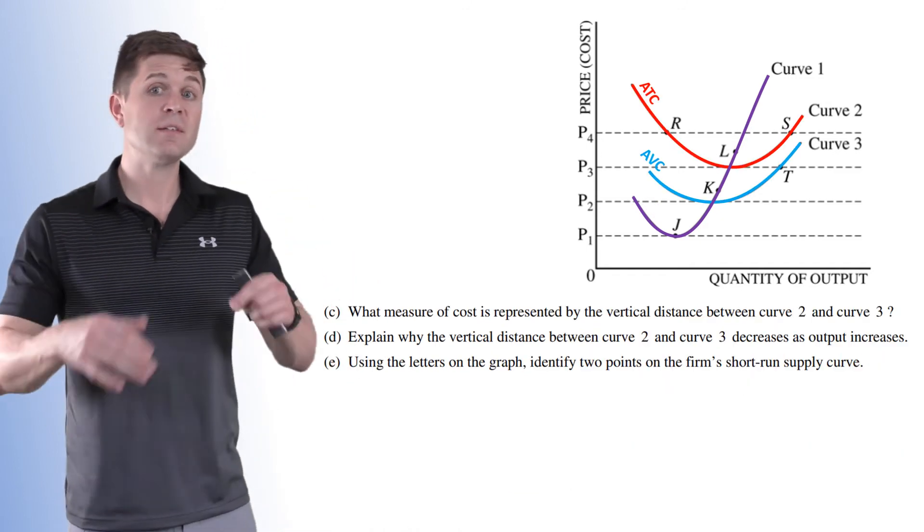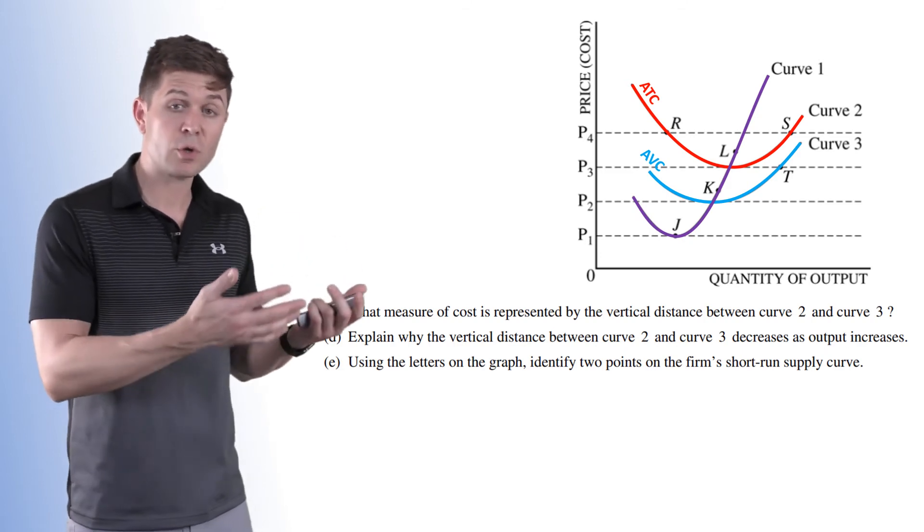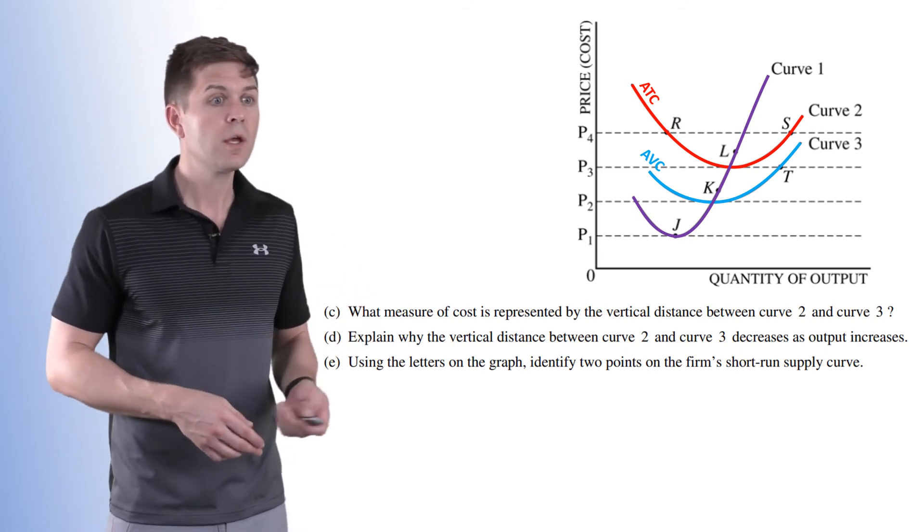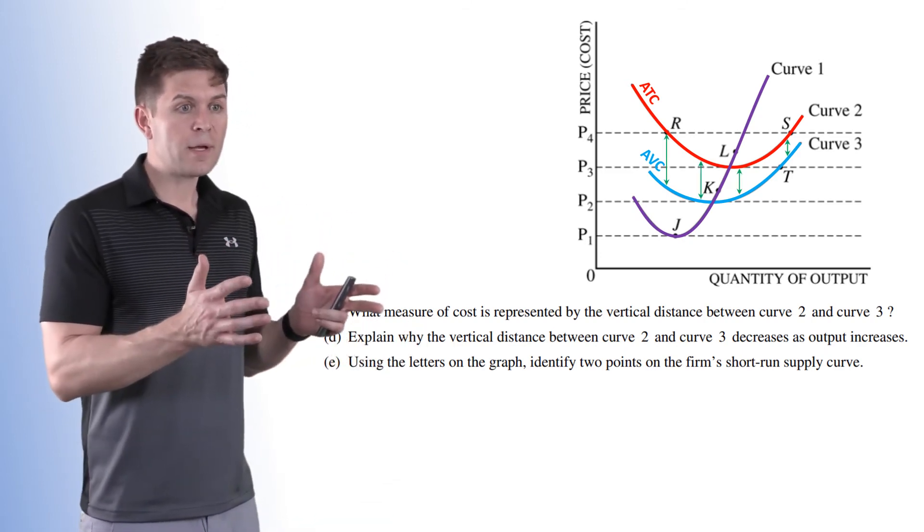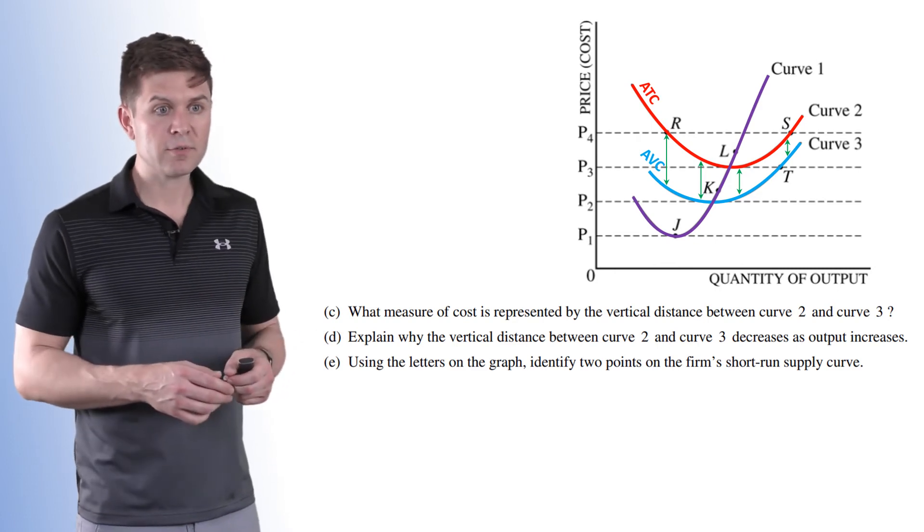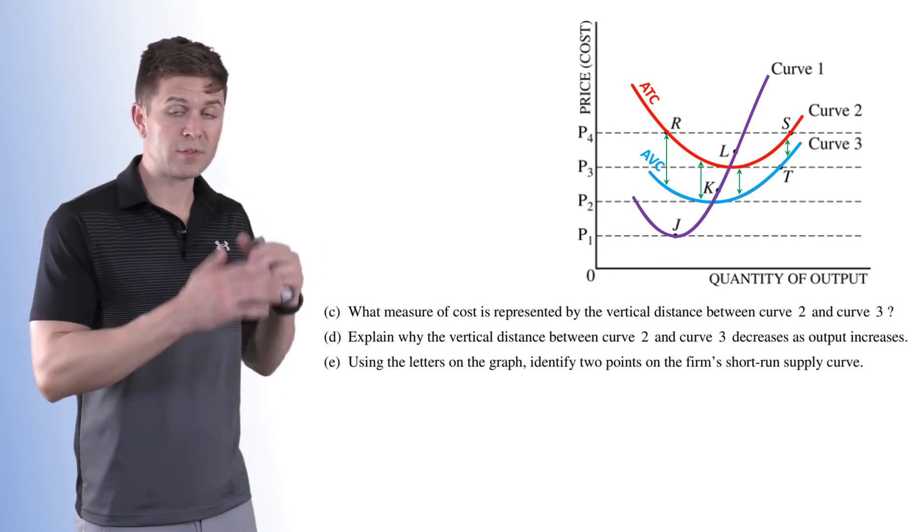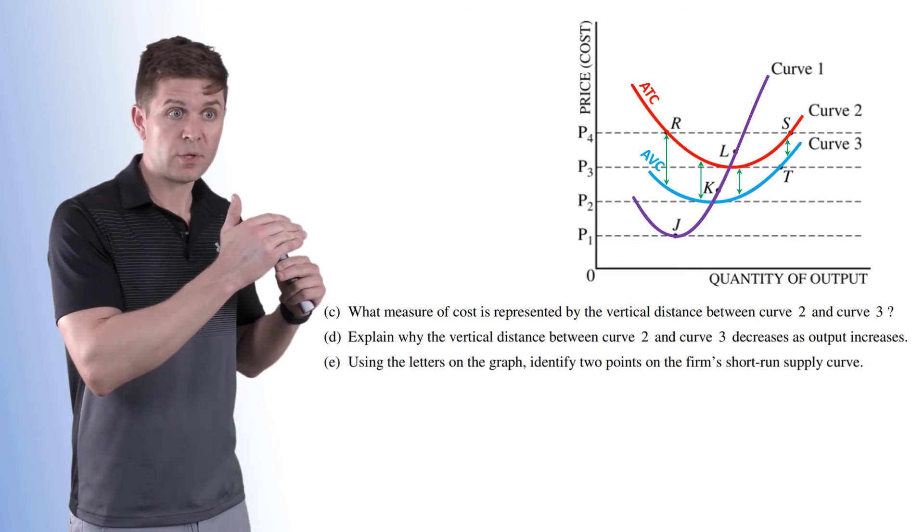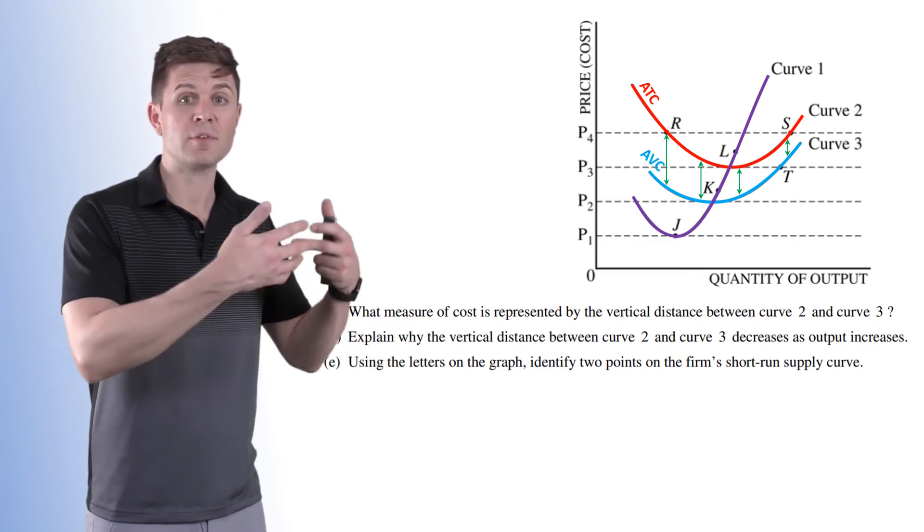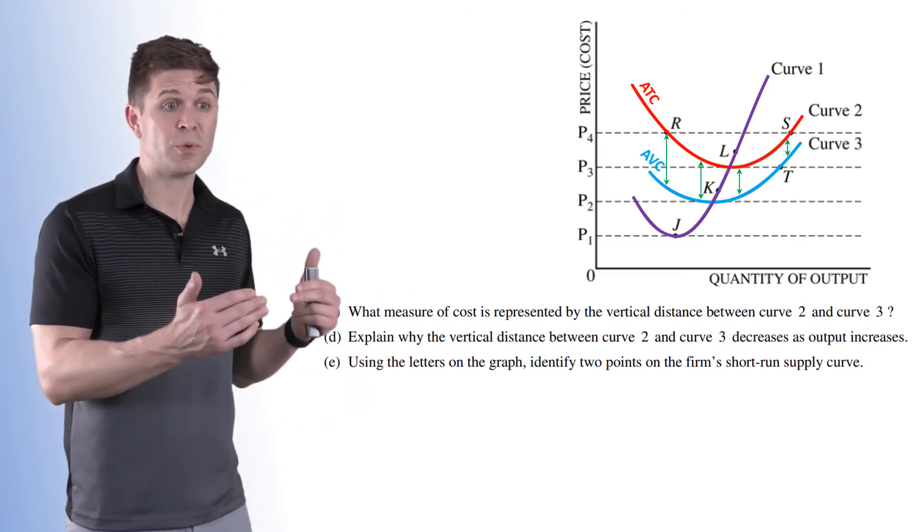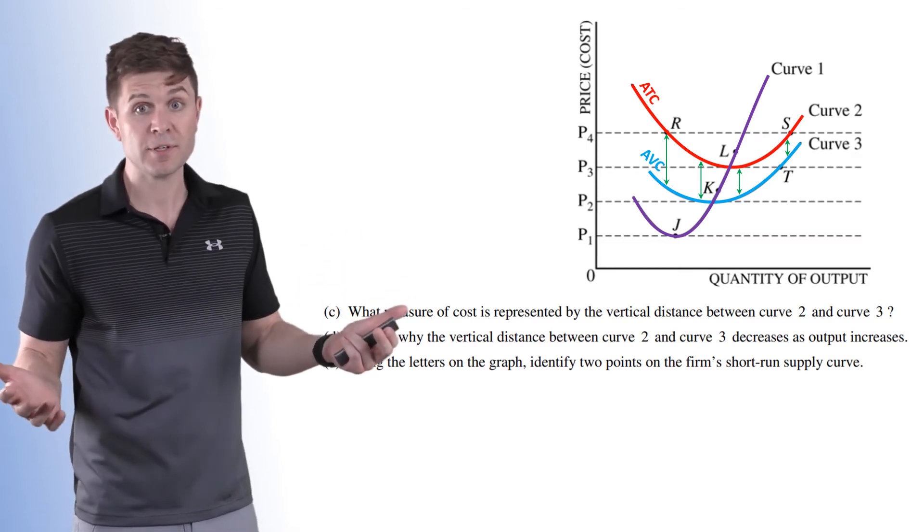Both parts C and D deal with the distance between curve two and curve three, or the average total cost and the average variable cost curves. So it asks what measure of cost is represented by the vertical distance between curve two and curve three. These green arrows represent that distance. We know we get average total cost by adding the average fixed cost to the average variable cost. So the distance between them is represented by the average fixed cost.